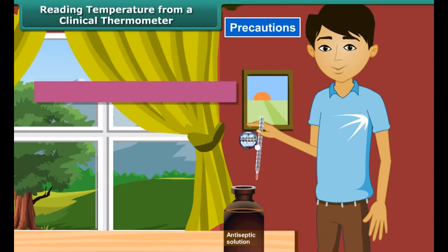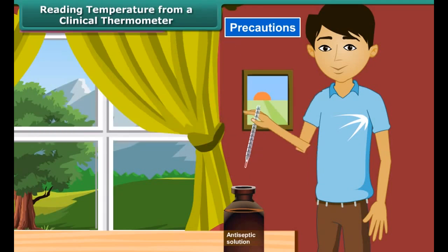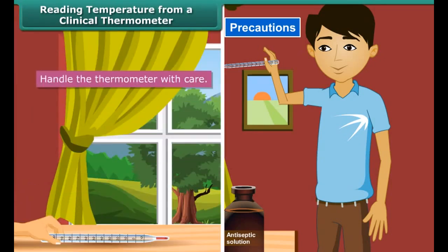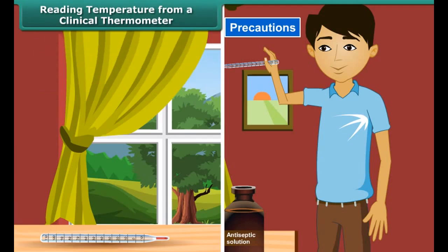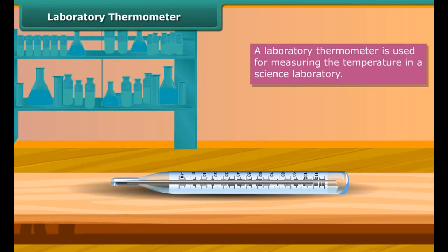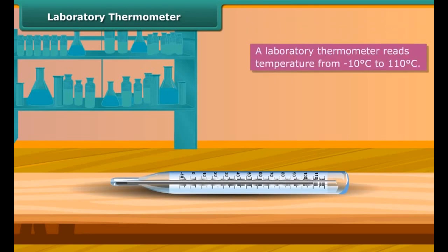Precautions to be observed while reading a clinical thermometer: the thermometer should be washed before and after use, preferably with an antiseptic solution. Ensure the mercury level is below 95 degrees Fahrenheit. Read the thermometer keeping the level of mercury along the line of sight. Handle the thermometer with care — if it hits against a hard object, it can break. Do not hold the thermometer by the bulb while reading it.